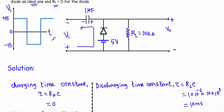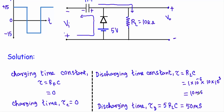Now let me consider the discharging time constant. The capacitor discharges when the diode is in reverse bias, discharging through the load resistor RL. Therefore the discharging time constant τ = RL × C = 10×10³ × 1×10⁻⁶ = 10 milliseconds. The total discharging time τ_D = 5 × RL × C = 50 milliseconds.